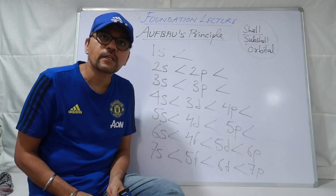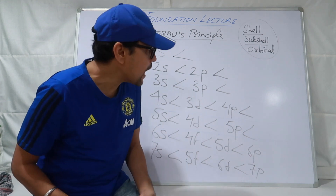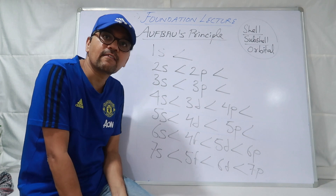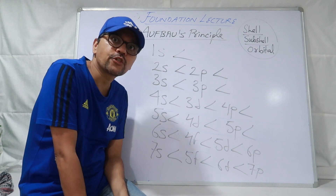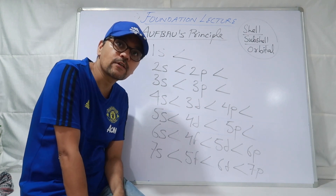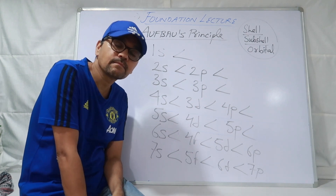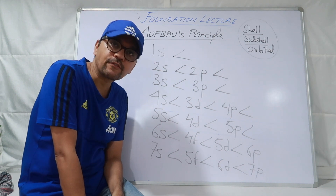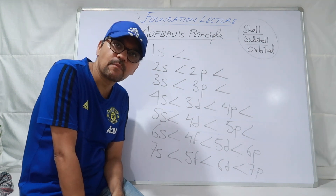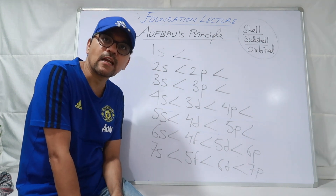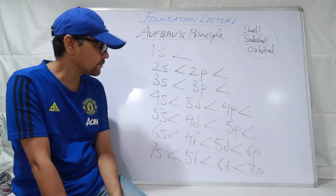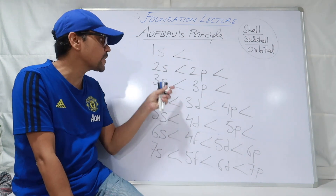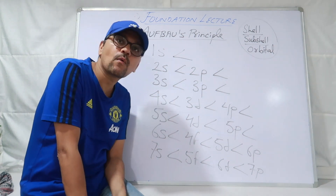Jab aap learn kar rahe ho, tab yaad rakho ki aapka jo 1, 2, 3, 4, 5, 6, 7 likha hai — wo aapka shell number hai. To total kitne periods hote hain? Saat. 1 stands for shell number 1, 5 stands for shell number 5, 7 stands for shell number 7. Theek hai — to pehla part yeh hai. Uske baad SPDF likha hua hai.